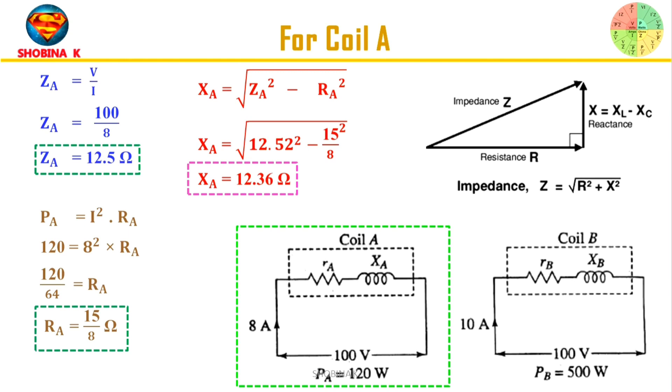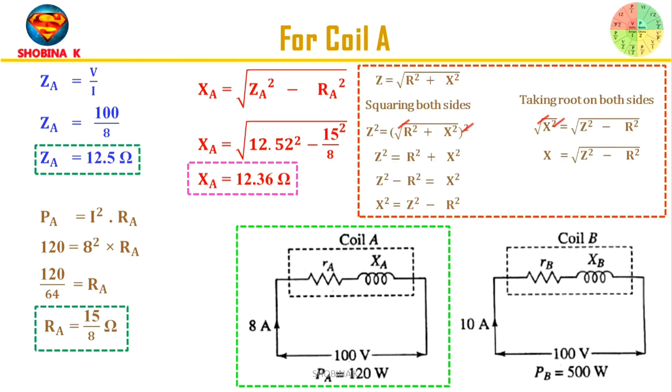Next, we need to find the reactance. Fortunately, if all the components are in series, we can use a simple formula Z = √(R² + X²). Now squaring both sides, we get Z² = R² + X². Now taking R² on the left side, we get X² = Z² - R². Now take root on both sides, we get X = √(Z² - R²). Here X is reactance. Now we know the formula for reactance, apply the corresponding value so that we get the reactance value for coil A.